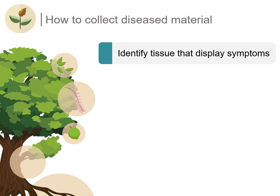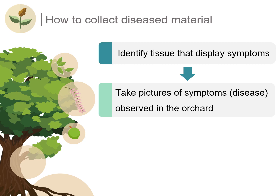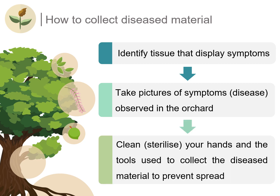Firstly, identify the tissue that displays the symptoms. This could be nuts, flowers, leaves, branches, or roots. Take pictures of the symptoms that you observe in the field and share this with us. For sampling, it is always important to sterilize both your hands as well as the tools that you will use to take the sample.